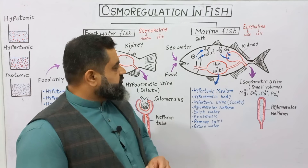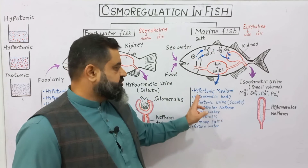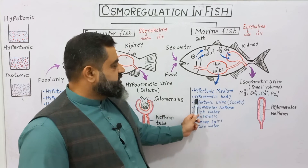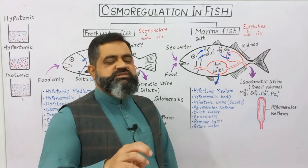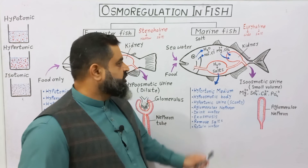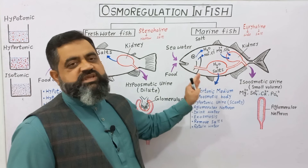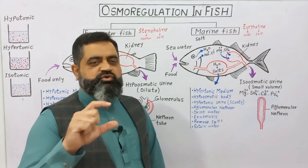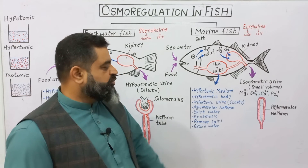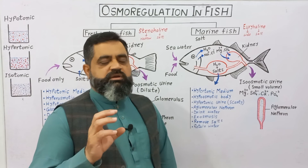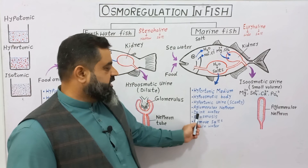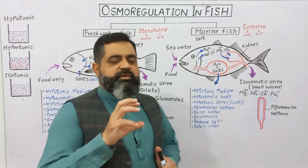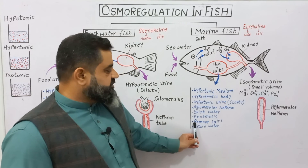To summarize marine fish adaptations: their environment is hypertonic, containing maximum salt. Their body is hypo-osmotic, meaning they contain less salt compared to their environment, so exosmosis takes place and water moves out. They produce hypertonic urine in a scanty, very small amount, containing large amounts of salt and less water. Their kidneys contain aglomerular nephrons so water is retained inside the fish. They drink a lot of water to maintain balance, and they remove salts while retaining water.